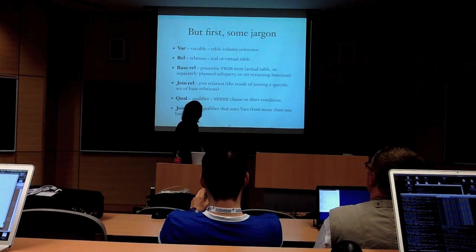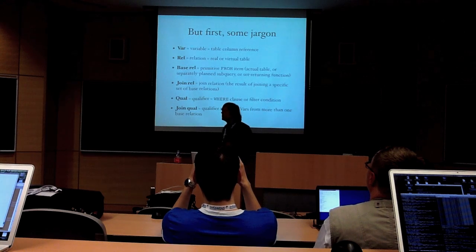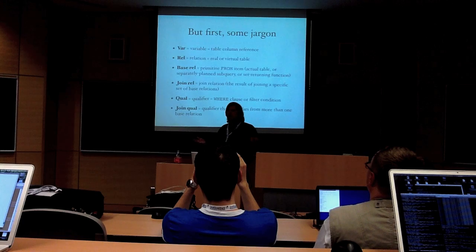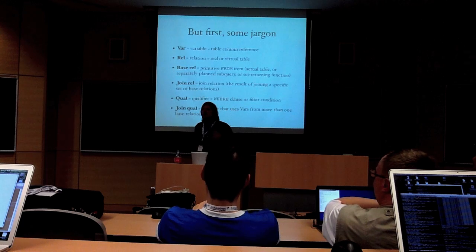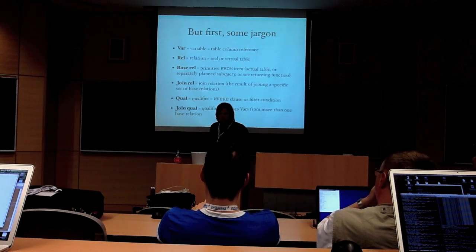A join relation is the result of joining a specific set of base relations. The end of the planner is to produce a join rel containing all the base rels of the query. But we have to work up to that by considering join rels that contain just subsets of the base rels. And I'll be talking a lot more about that in a bit.